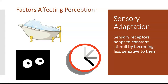Another factor affecting whether we perceive something is whether we are even consciously aware of the sensation occurring, or how strong the physical sensation is. This has a lot to do with how sensory receptors respond to incoming information. If a stimulus is constantly there or ongoing, our sensory receptors will gradually adapt and become less sensitive to it. That is called sensory adaptation.